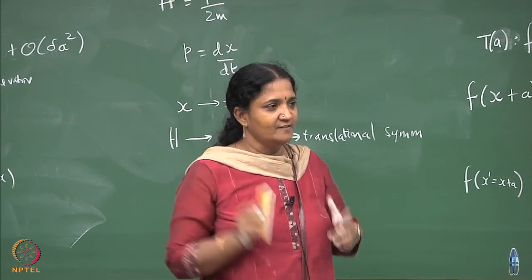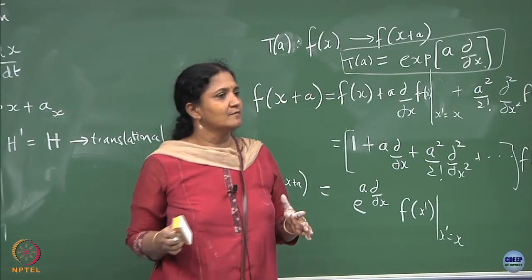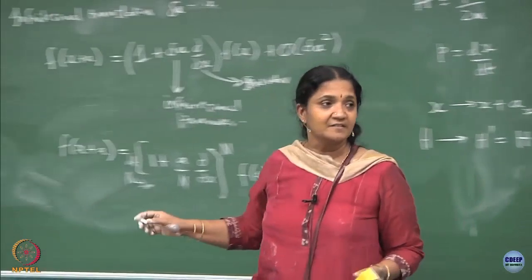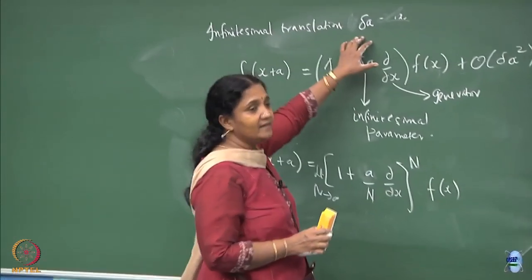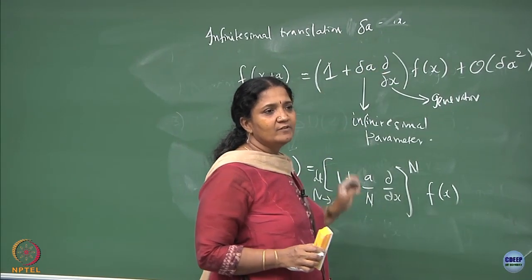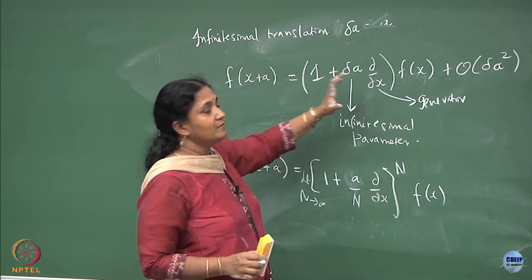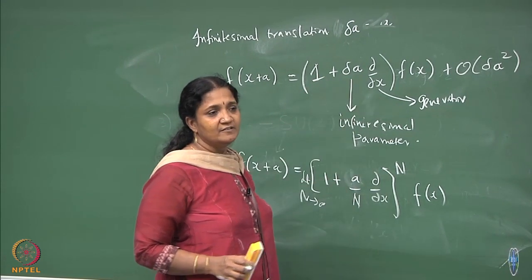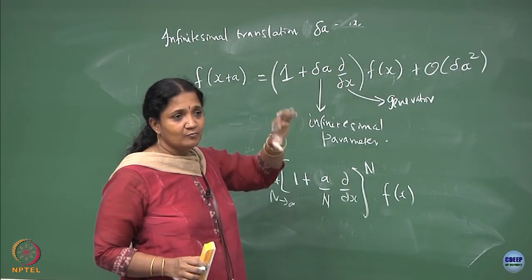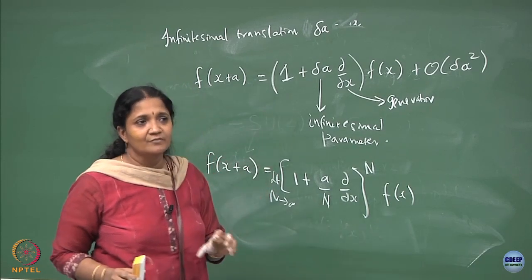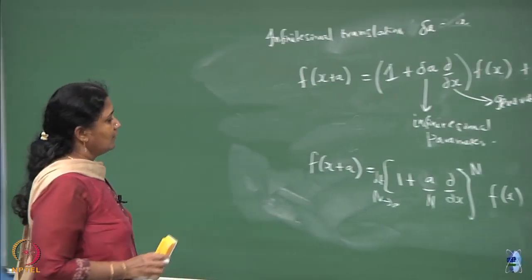This is the first difference between discrete groups and continuous groups. For translation or for rotations, I can do an infinitesimal rotation and then make a finite rotation by taking N operations of infinitesimal rotation. That is the advantage: any finite transformation can be achieved from infinitesimal transformations, unlike discrete symmetries like C4 where you can only act in multiples of C4.